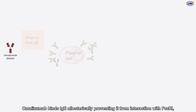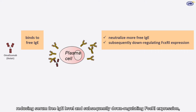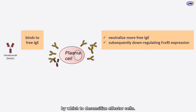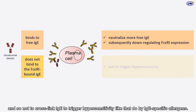Omalizumab binds IgE allosterically, preventing it from interaction with FC-Epsilon-R1, reducing serum-free IgE level and subsequently down-regulating FC-Epsilon-R1 expression, by which to desensitize effector cells. Omalizumab does not bind to FC-Epsilon-R1-bound IgE and so does not cross-link IgE to trigger hypersensitivity as do IgE-specific allergens.